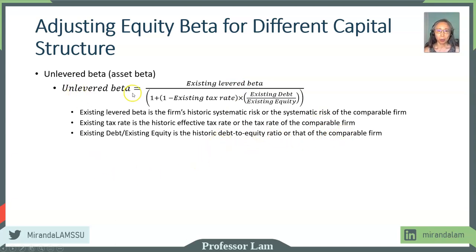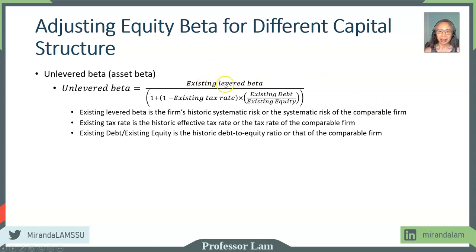So the first step in adjusting equity beta is to take the existing levered beta that you computed from regression or through other means, and then adjust for the existing tax rate and debt to equity ratio to get the unlevered beta. This is step one.